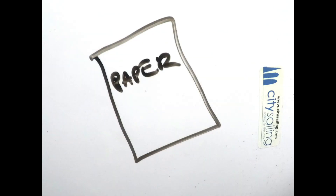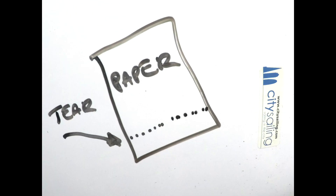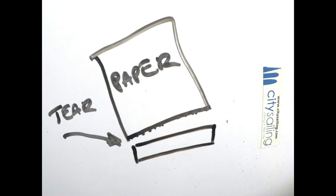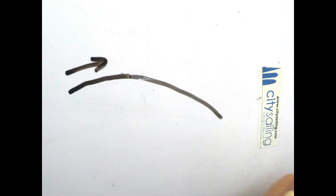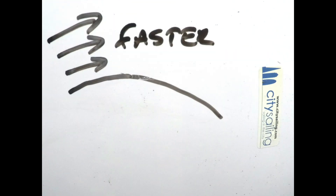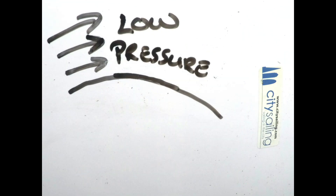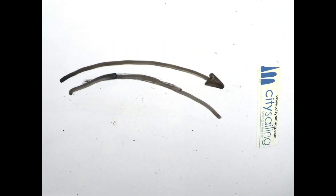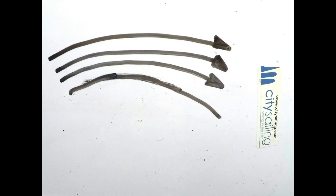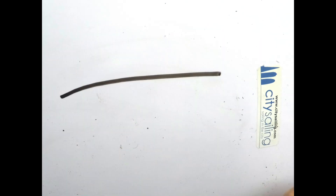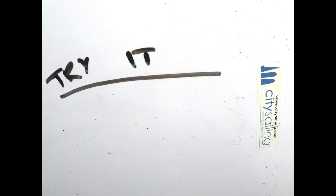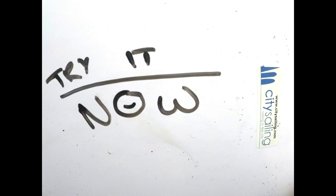To give it a go, all you need is a piece of paper. Tear along the bottom — there we go. Hold it sideways and blow across the top. That makes faster air across the top, which creates a low pressure — good! Blow hard, and there's the lower pressure, which in effect sucks it up. The paper rises as you blow it. Go on, give it a try now.